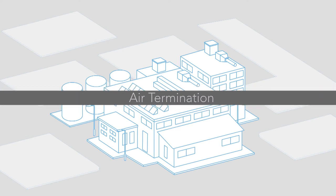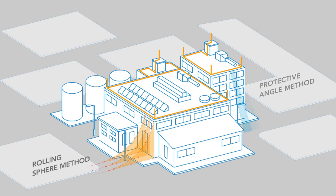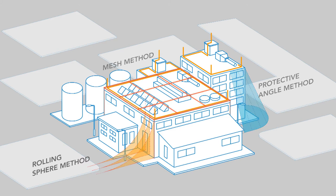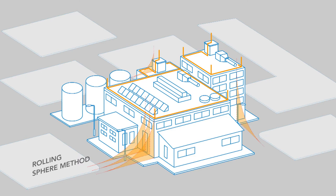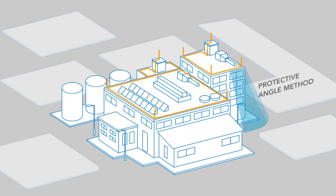Air Termination: The positions of the air termination can be decided based on the rolling sphere method, the protective angle method, and the mesh method. The rolling sphere method can even be used to define the zones of protection for structures with complex geometry, with the radius for the sphere determined directly from the class of LPS. The protective angle method is used for simple structures, but only up to a certain height as determined by the class of LPS.